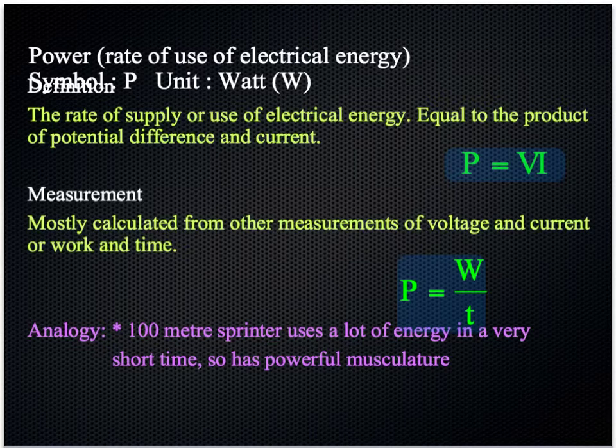The first sentence, the rate of supply or use of electrical energy, is shown in this equation, where W stands for the work done, which is the same as the transfer or use or supply of electrical energy per unit time.